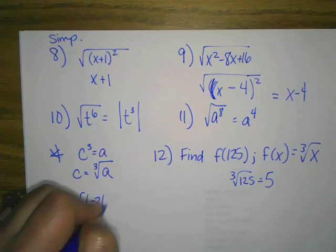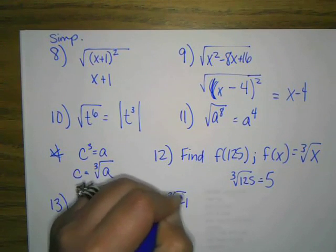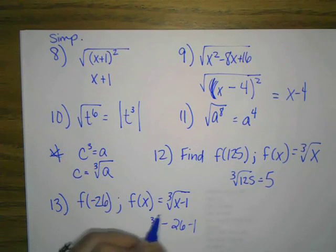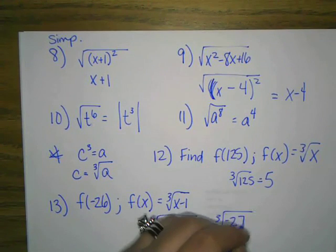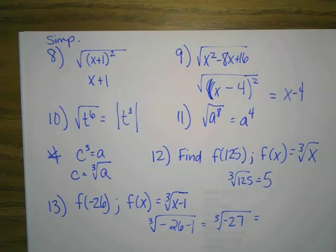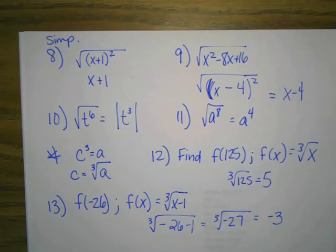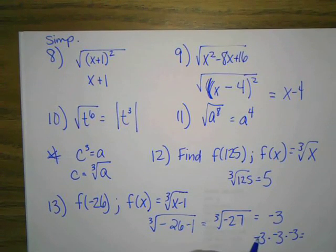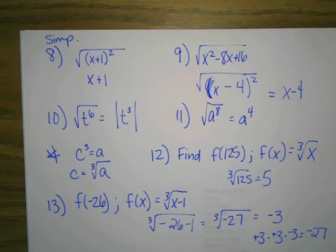Let's do another one. f of negative 26. So you have f of x equals cube root of x minus 1. So let's plug negative 26 minus 1, and we take the cube root of that. Negative 26 minus 1 is negative 27. Cube root of negative 27. And this cube root can be negative, and it is a negative number, so we get negative 3. Because negative 3 times negative 3 times negative 3 equals, these turn to positive, this stays negative 27.